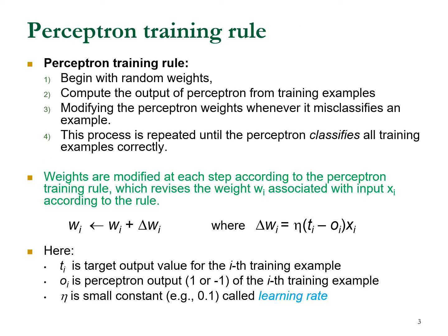The first training method is called the perceptron training rule. You begin with random weights — usually very small values. In the next step, you compute the output of the perceptron from training examples. Since perceptron is for classification learning, each input data comes with a target value, so training examples contain xi and ti: xi is input data and ti is target value.